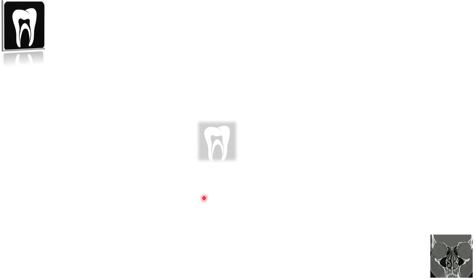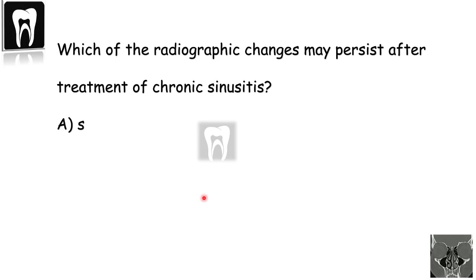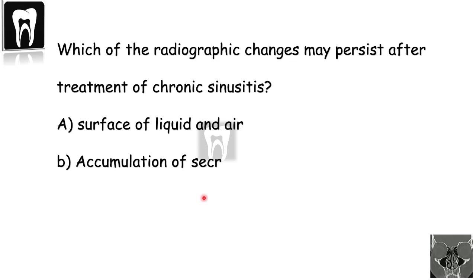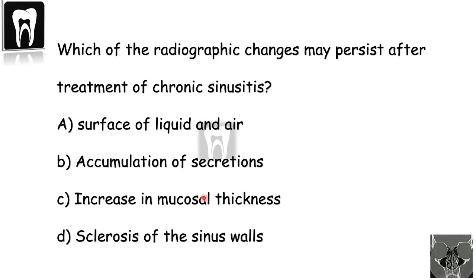So let's see the question. A, B, and C are incorrect because after treatment, the liquid-air surface, the secretion accumulation, and the mucosal thickening are all reduced and can become invisible. But the sclerosis of the sinus wall can be persistent — so D is correct.